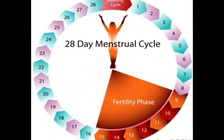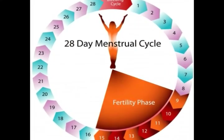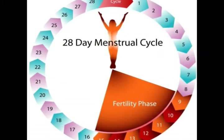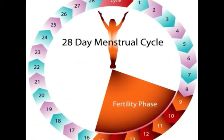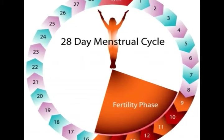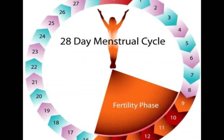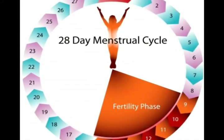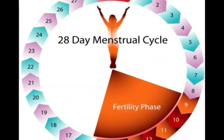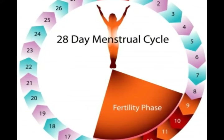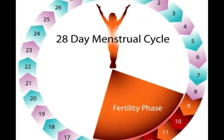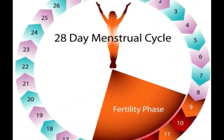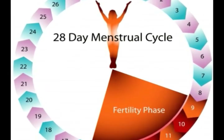Inhibin performs the opposite role of the hormone activin in the menstrual cycle. Activin promotes FSH secretion, which in turn helps to ensure the development of ovarian follicles. Inhibin may compete with activin for similar receptors, or bind to its own receptor, to serve as a counterweight to activin.